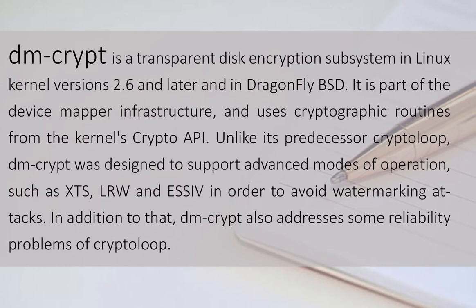DmCrypt is a transparent disk encryption subsystem in Linux kernel versions 2.6 and later and in DragonFly BSD. It is part of the device mapper infrastructure and uses cryptographic routines from the kernel's crypto API. Unlike its predecessor CryptoLoop, DmCrypt was designed to support advanced modes of operation such as XTS, LRW, and ESSIV, in order to avoid watermarking attacks.